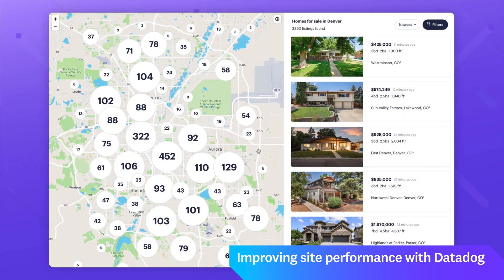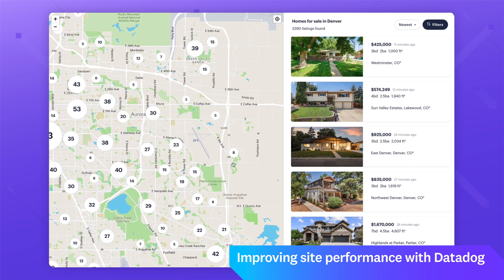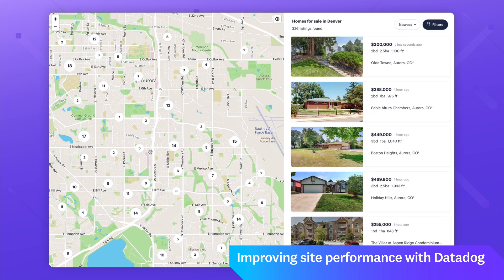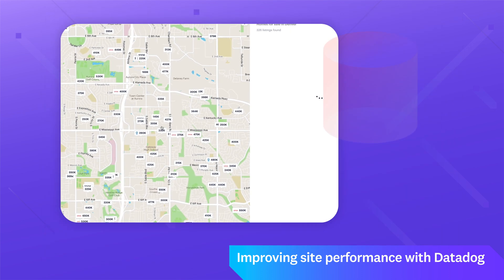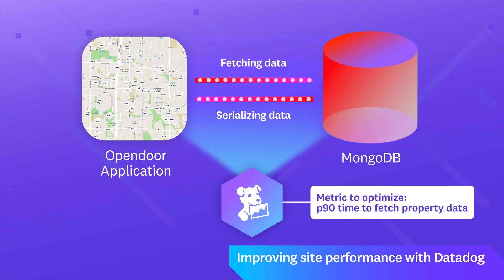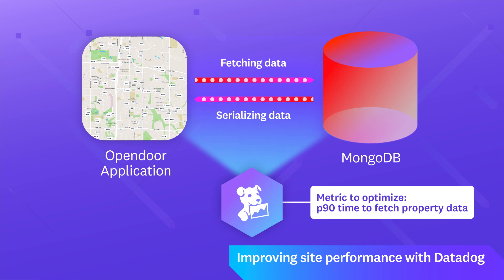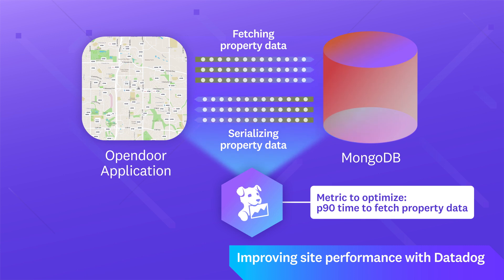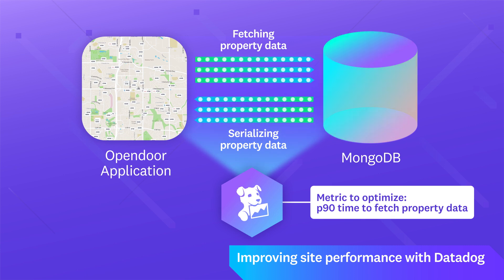Opendoor operates an online real estate marketplace, which involves visualizing homes on a map. These maps were having performance issues, so Peter's team began to investigate where these issues were occurring. With Datadog, they found that the slowness was mostly happening in active model serializers and fetching from the database. They identified a metric to optimize: P90 time to fetch property data for the map, which captures what the majority of users were experiencing while excluding outliers. By creating specialized serializers, fixing a caching bug, optimizing and parallelizing queries, and optimizing the way they interacted with MongoDB, Peter's team was able to reduce that metric from over 10 seconds to just under one second.